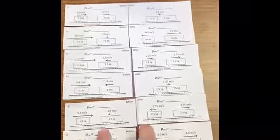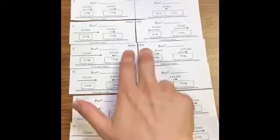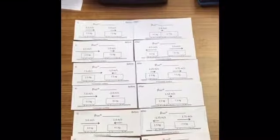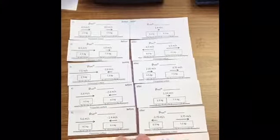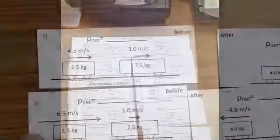And then you look at each card and they're labeled either as a before or an after. And then you have to remember with conservation momentum, momentum is conserved even if there's a collision. So this is before they collide and this would be an after they collide. However, these are not paired. It is scrambled so that you have to figure out how they are paired correctly.